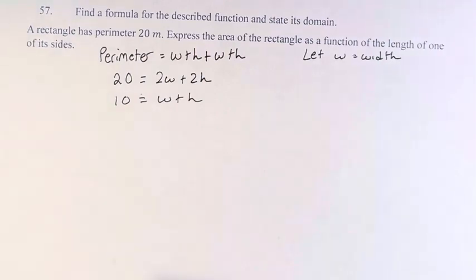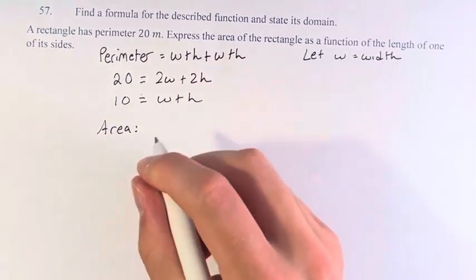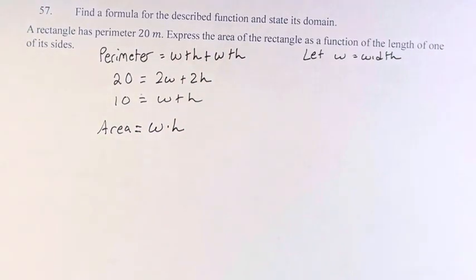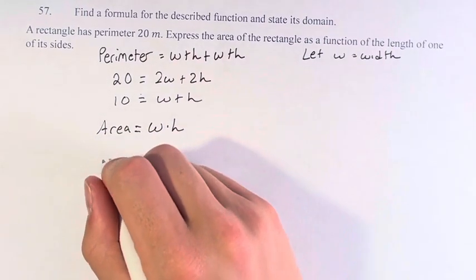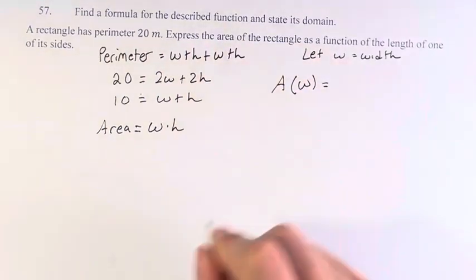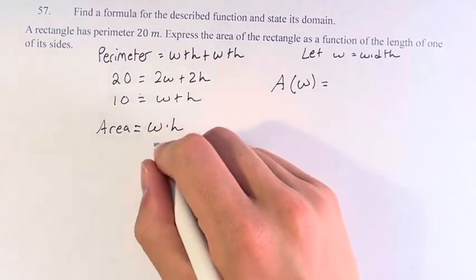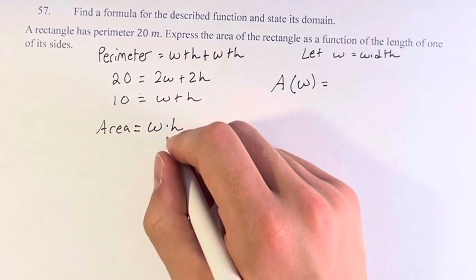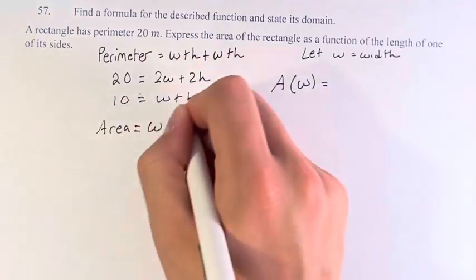So next, we want to find the area, which is equal in a rectangle to the width times the height. This is the function that we want. We want A of w. This function of w is equal to something. However, what we have right here is not in terms of w. It's w and h. So we want to get rid of this h and get it in terms of w.